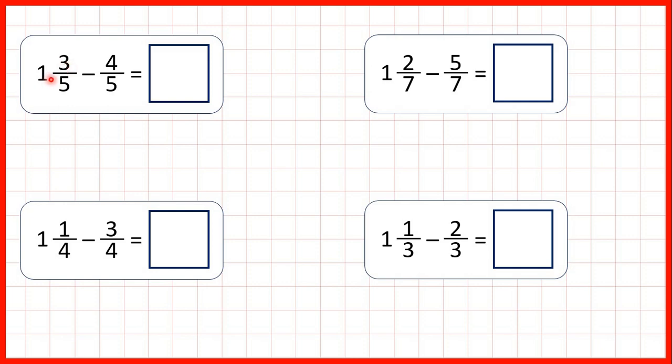So as an improper fraction, 1 and 3 fifths is 8 fifths. That's because 1 times 5 is 5, and then if we add the numerator, 5 plus 3 is 8.